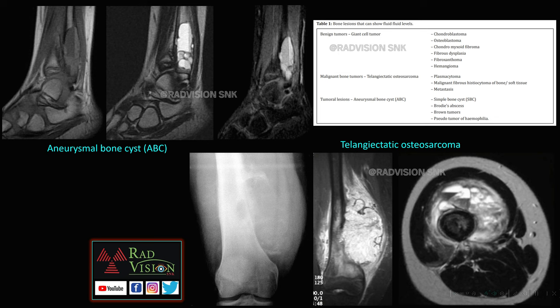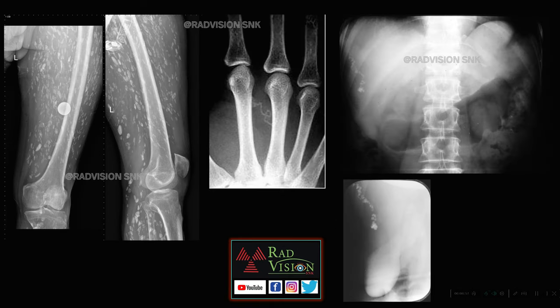Lesions showing fluid-fluid levels include benign tumors such as chondroblastoma, osteoblastoma, fibrous dysplasia, and hemangioma; malignant tumors such as plasmacytoma and malignant fibrous histiocytoma; and tumor-like lesions including aneurysmal bone cyst, simple bone cyst, giant cell tumor, brown tumors, and pseudotumors of hemophilia.